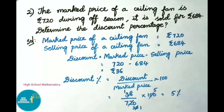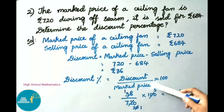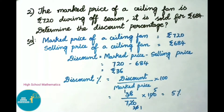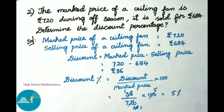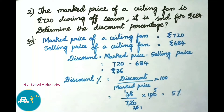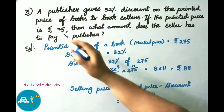The question asks us to find discount percentage. Discount percentage equals discount divided by market price, into 100. That is 36 by 720 into 100. Simplifying: 36 divided by 720 gives 1 by 20, and 1 by 20 into 100 equals 5. Therefore, discount percentage on ceiling fan is 5%.